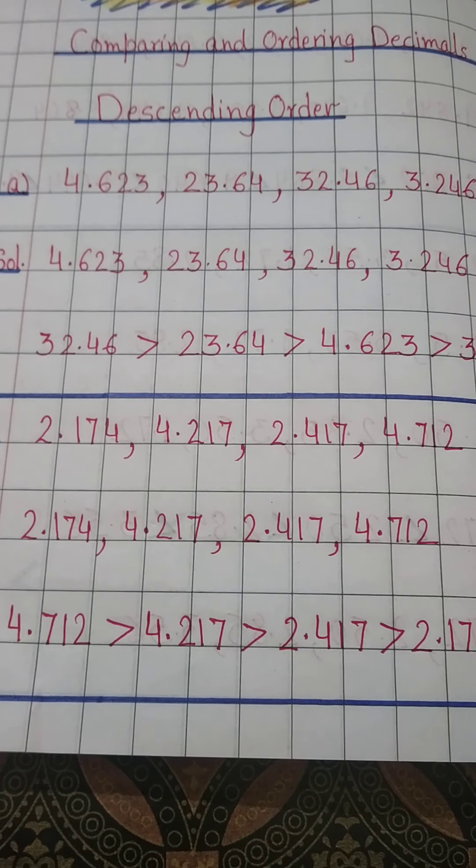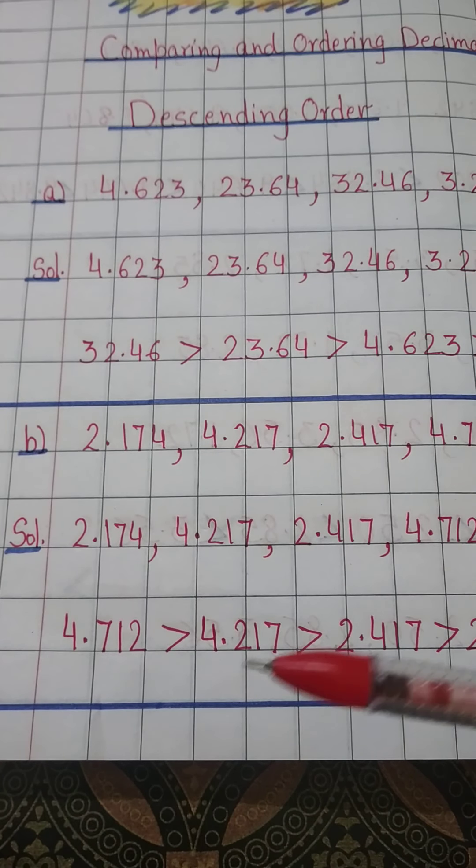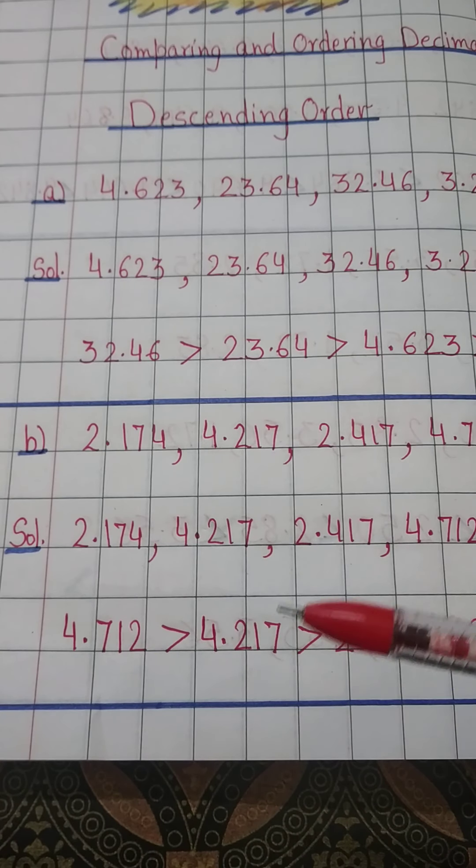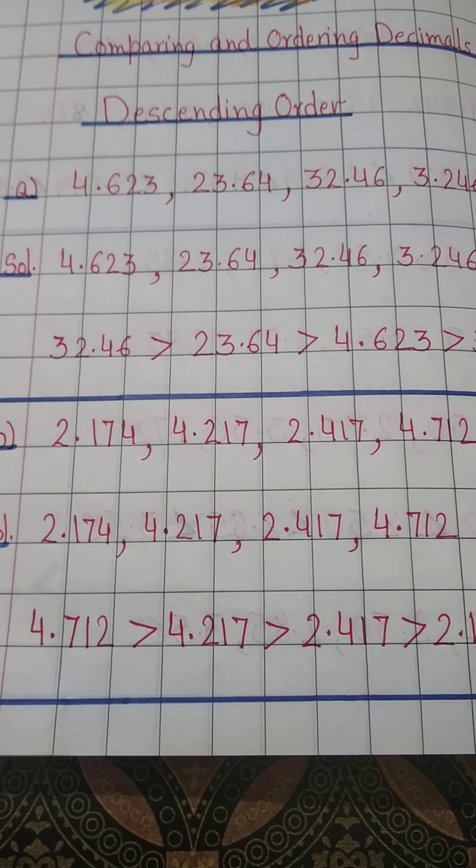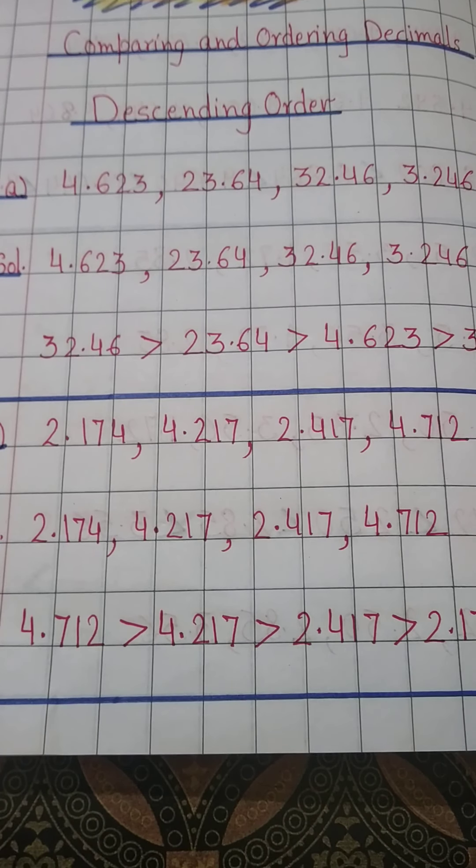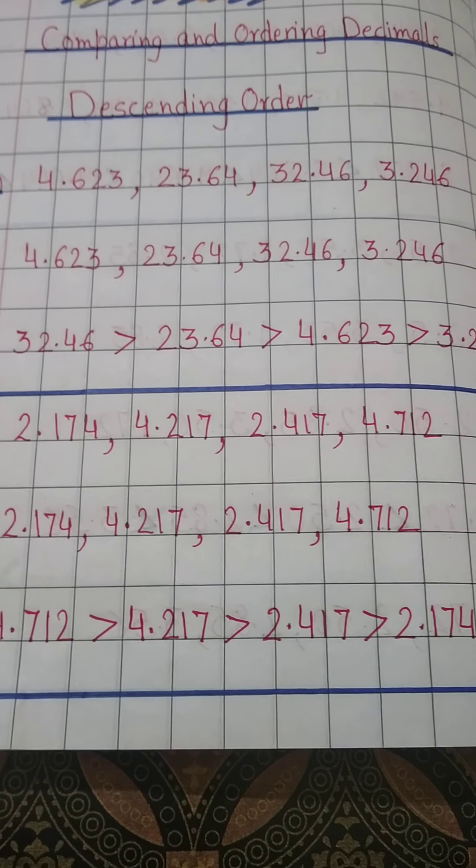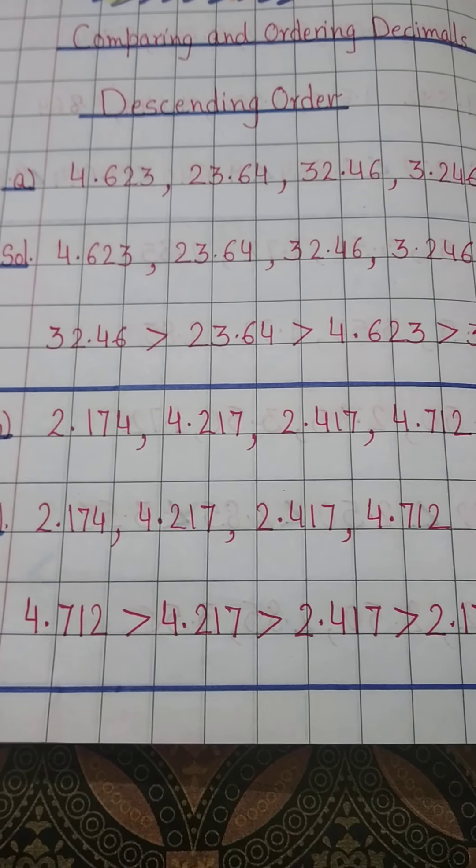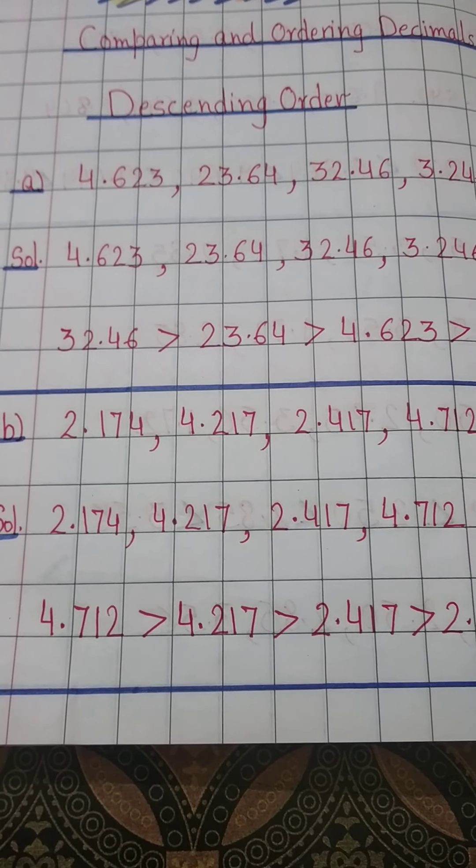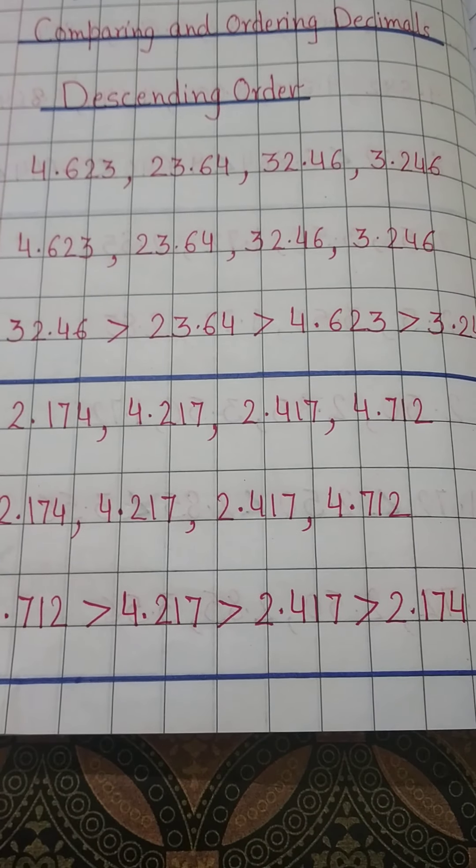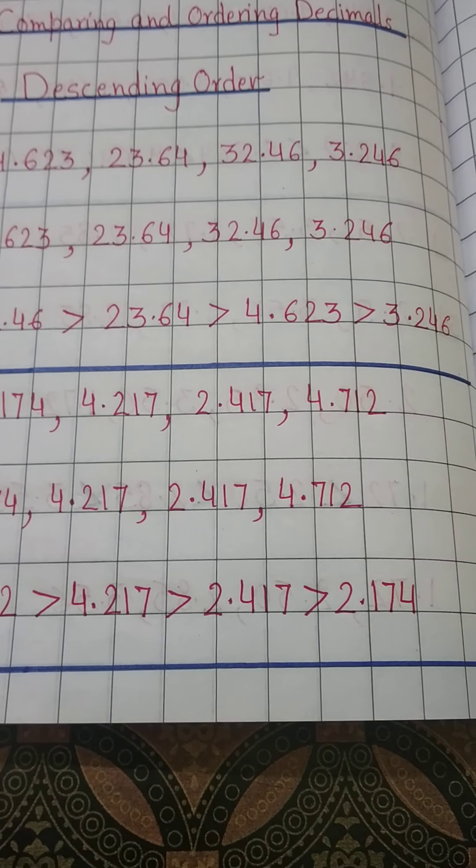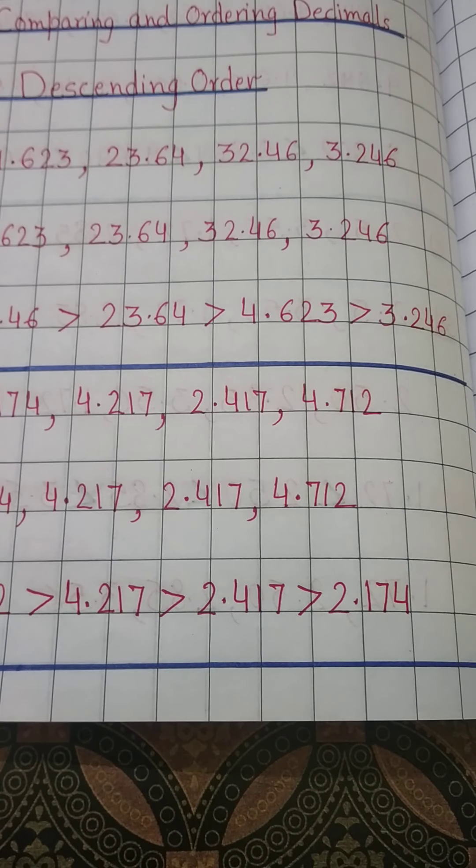So we will write 4.712 first, after this 4.217. Again, we will compare the decimal numbers 2 point something - 2.174 and 2.417. That means 2.417 is greater than 2.174. So we will write 2.417 and in the last 2.174. We can write 4.712 is greater than 4.217, greater than 2.417, greater than 2.174.